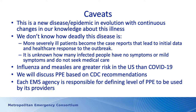Some important caveats: this is a new disease, and in China it is an epidemic. It's evolving, and changes in our knowledge are occurring almost daily. We really don't know how deadly this disease is. The outbreak was identified because the more severely ill patients became the case reports driving the initial concern. We don't know how many infected people have minimal or no symptoms and don't seek care. We talk about a mortality rate of two to three percent, but that's based on known patients with the disease. The rate may actually drop if there's a larger population of infected but asymptomatic individuals.